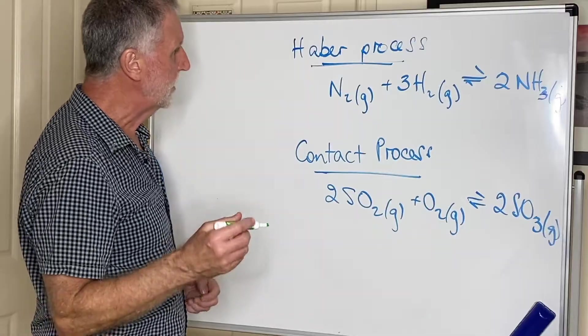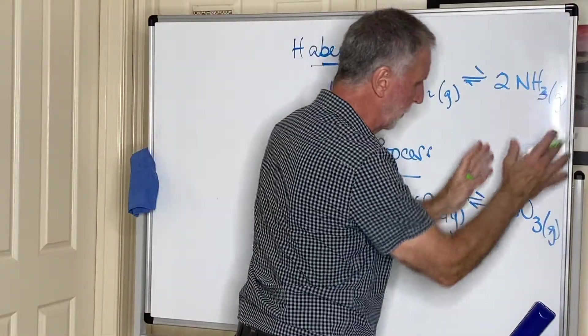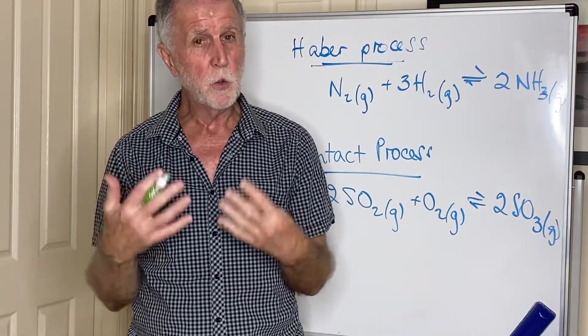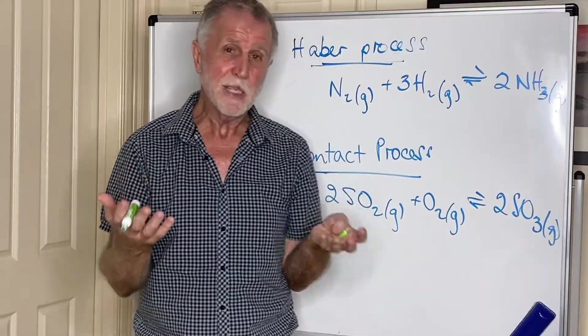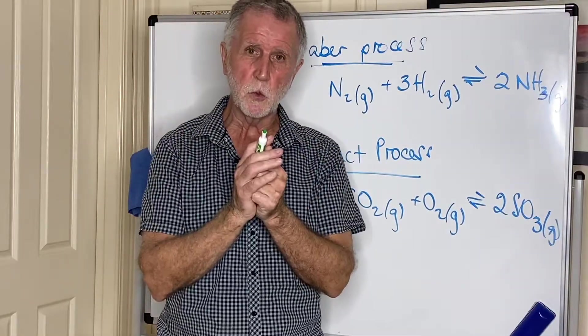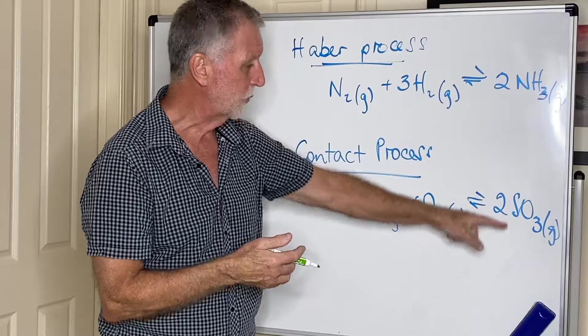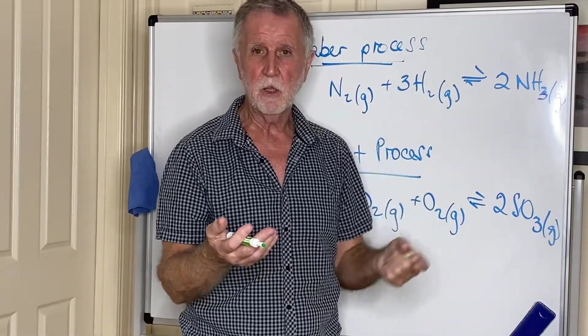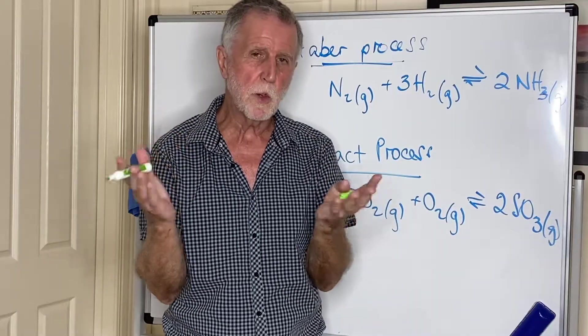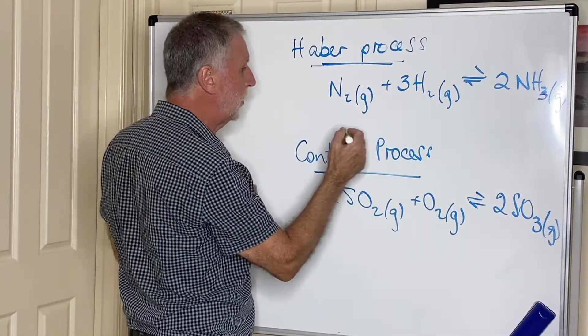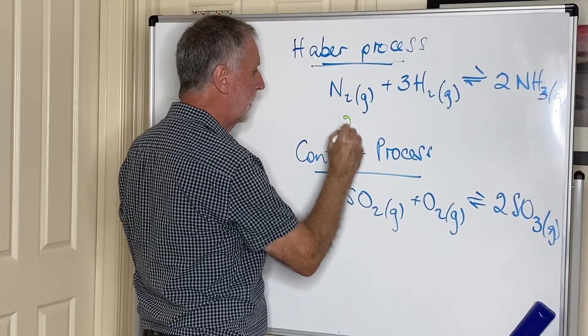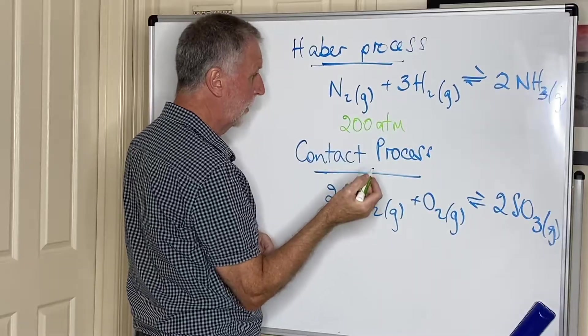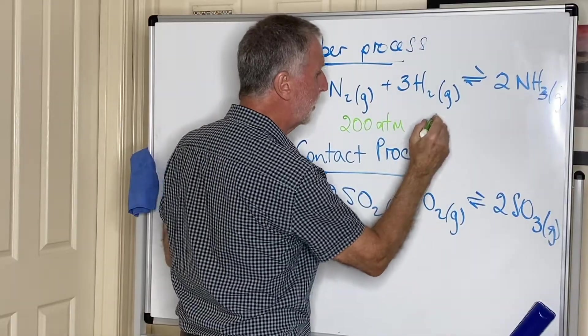In both cases, we need to maximize the yield of product but also keep an eye on rate of reaction, because if you're an industrial chemist, you need to get a compromise between the two. It's no good getting a fantastic yield if it's too slow, or having it fantastically quick if you don't get much yield. In the Haber process, the conditions they use are a high pressure, usually around 200 atmospheres, a temperature of about 450 degrees centigrade, and they use an iron catalyst.